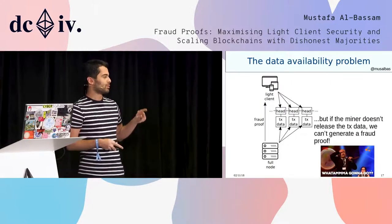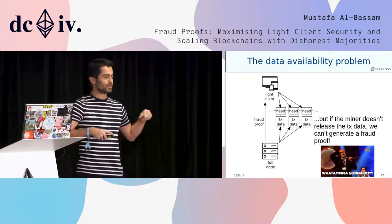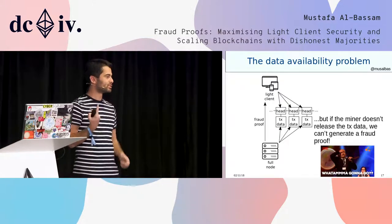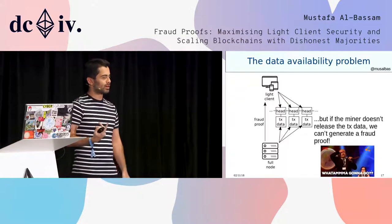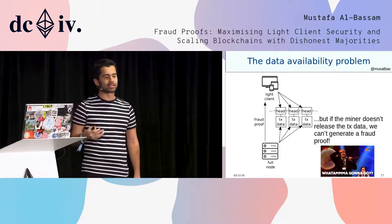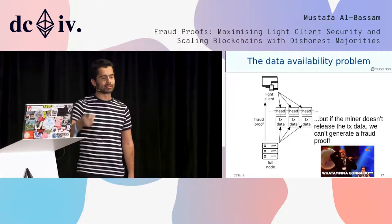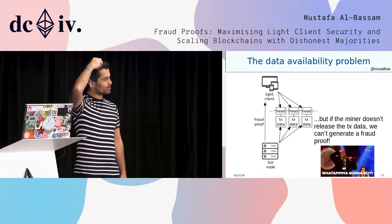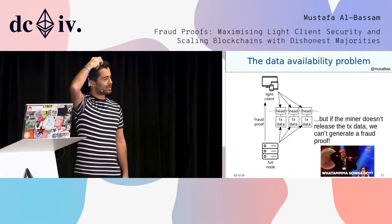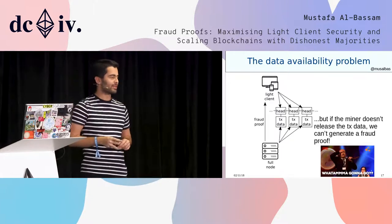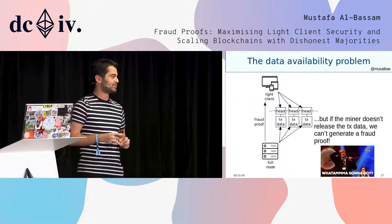Now we have a working unified fraud proof system that only requires one single fraud proof rather than many different fraud proofs like some of the earlier ideas were proposing. But the biggest problem with this is something called the data availability problem.